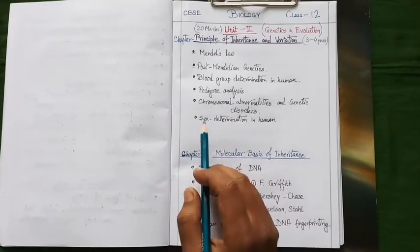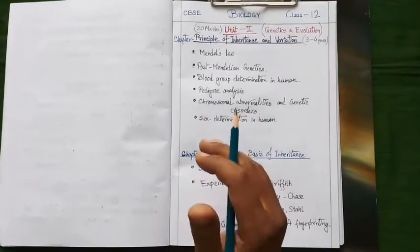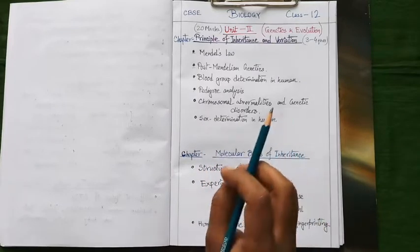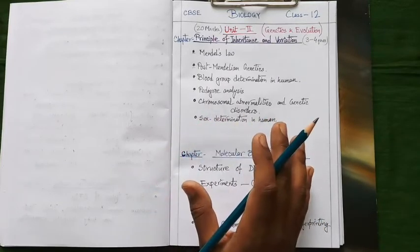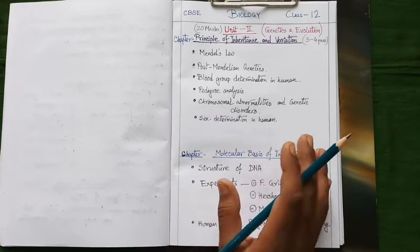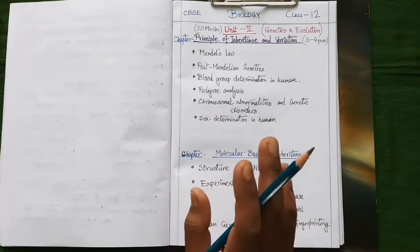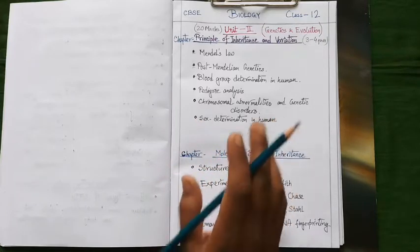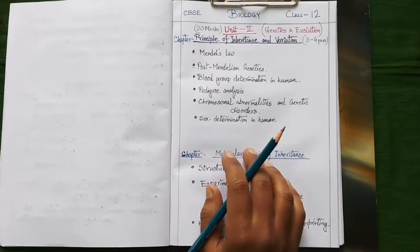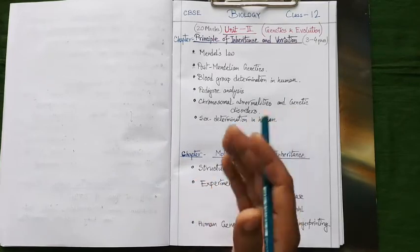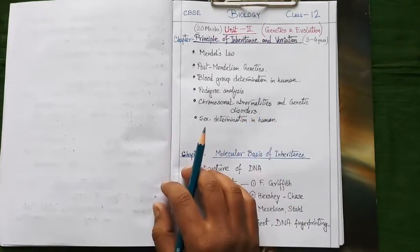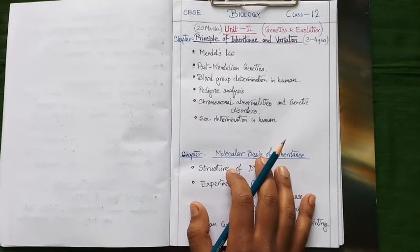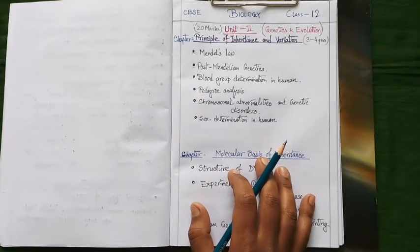Our last topic, last important topic under this chapter is sex determination in human. You need to prepare the detailed mechanism of sex determination with detailed cross in human. And who is responsible for creating the sex in human babies? You need to know also that one, whether it is father or the mother. So here are the different important topics of our principle of inheritance and variation chapter.